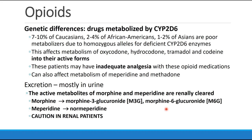Many opioids and other anesthetic agents are metabolized by cytochrome P450 2D6. About 7 to 10% of Caucasians, 2 to 4% of African Americans, and 1 to 2% of Asians are poor metabolizers — patients with homozygous alleles for the deficient cytochrome 2D6 enzyme. This affects metabolism of oxycodone, hydrocodone, tramadol, and codeine into their active forms, as these are pro-drugs. Poor metabolizers will have inadequate analgesia with these medications. This enzyme deficiency can also affect metabolism of meperidine and methadone, leading to prolonged clinical effects.